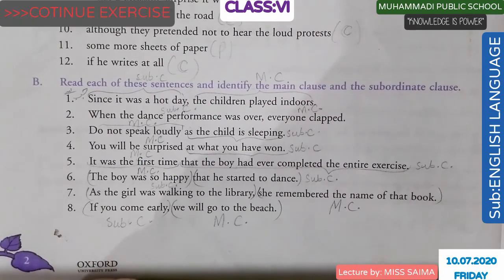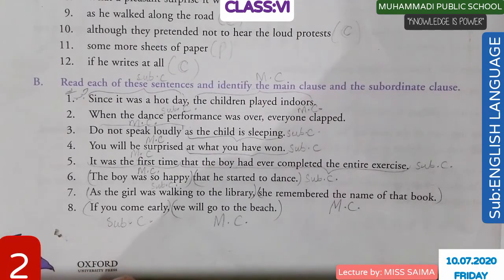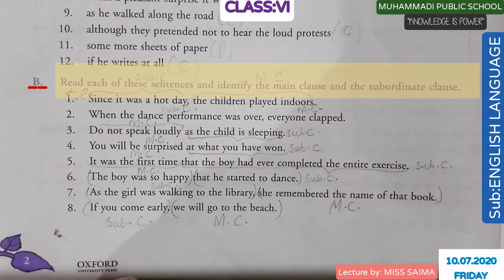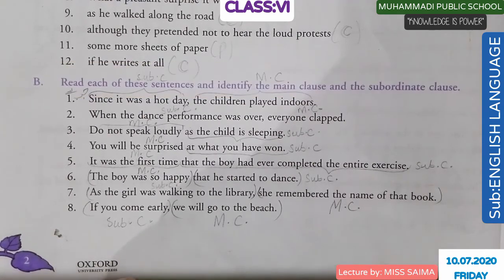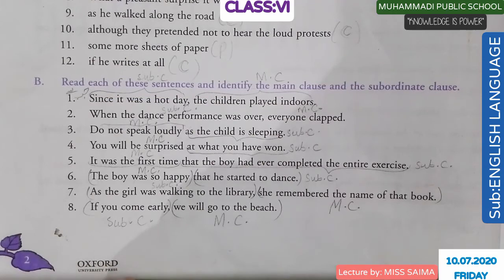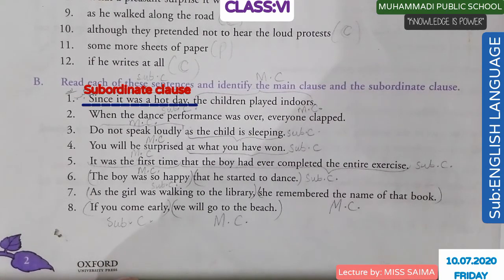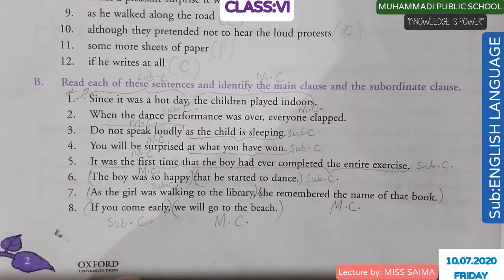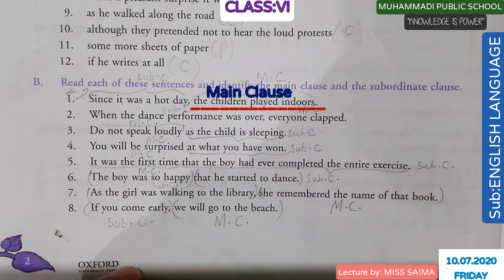Now students, take out your book page number 2. There is an Exercise B. Read each of these sentences and identify the main clause and the subordinate clause. Number 1: 'Since it was a hot day, the children played indoor.' 'Since it was a hot day' is the subordinate clause. 'The children played indoor' is the main clause.